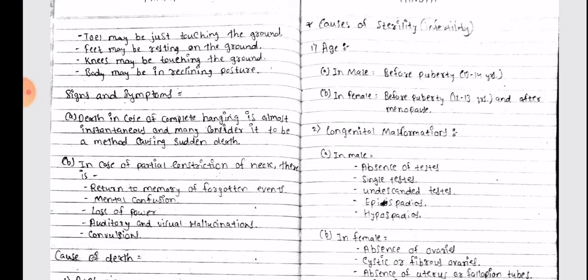Causes of sterility, infertility: Age - in male, before puberty; in female, before puberty and after menopause.